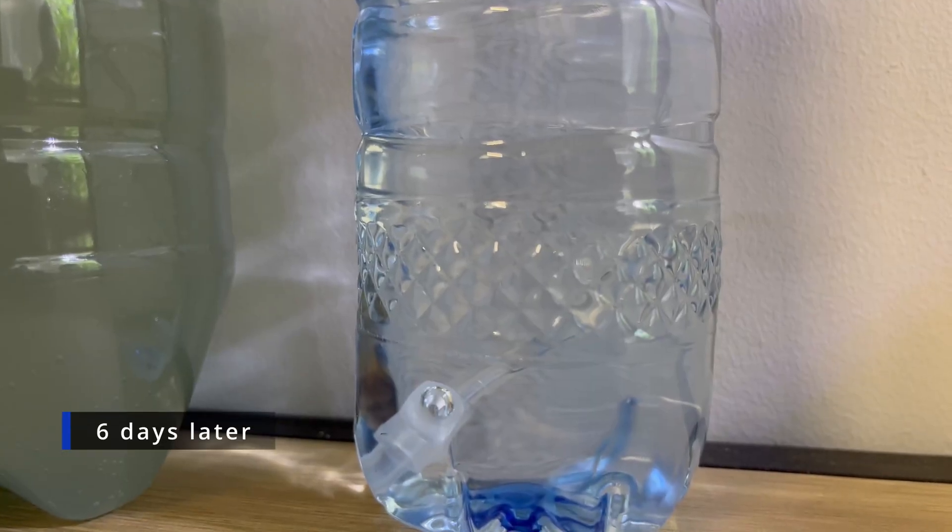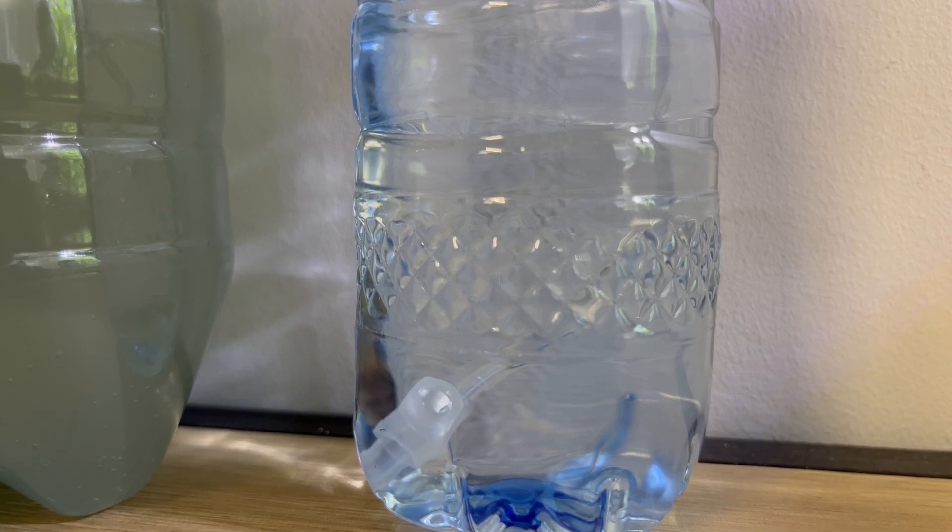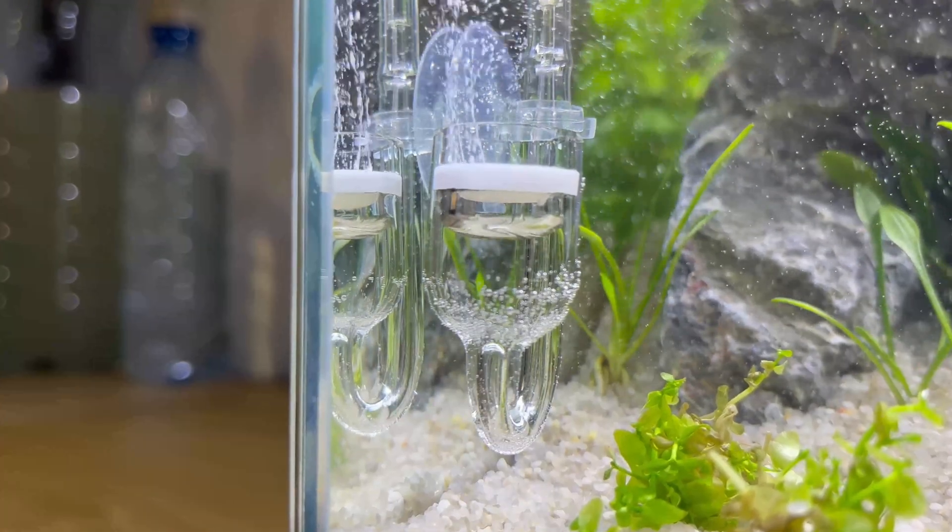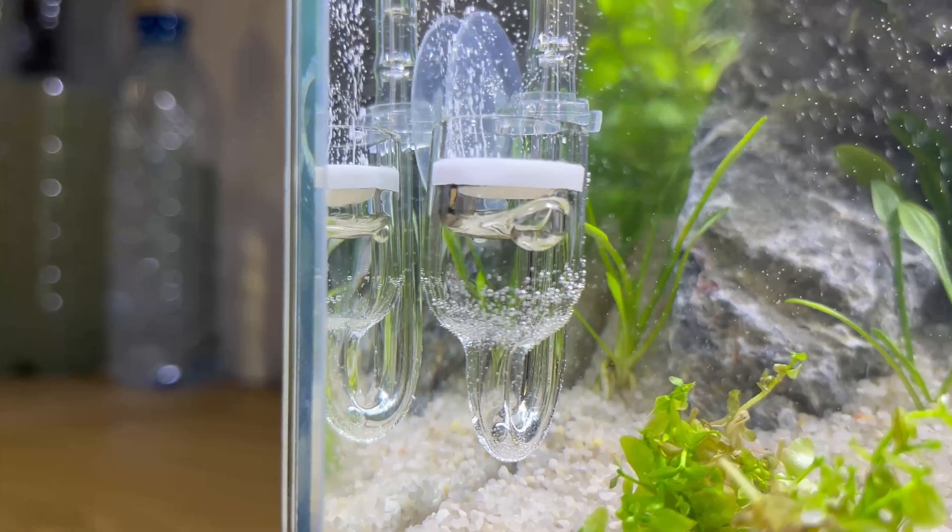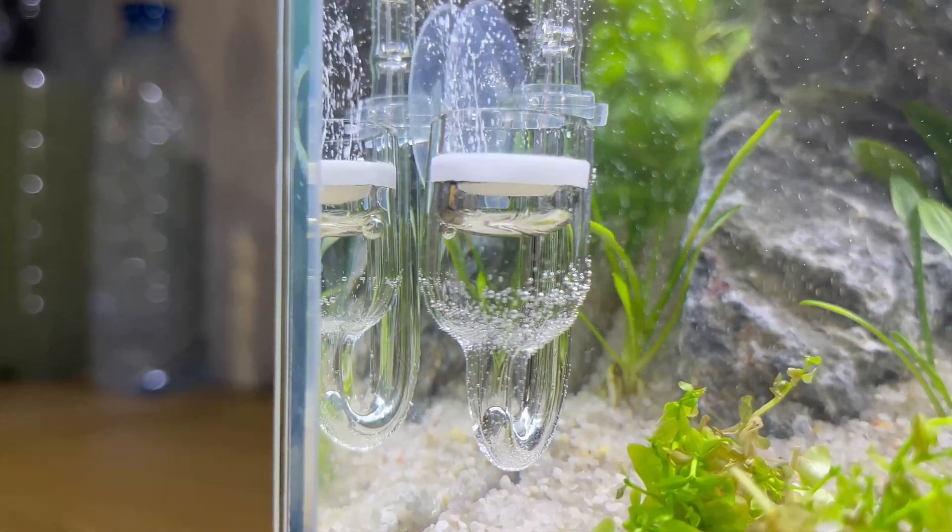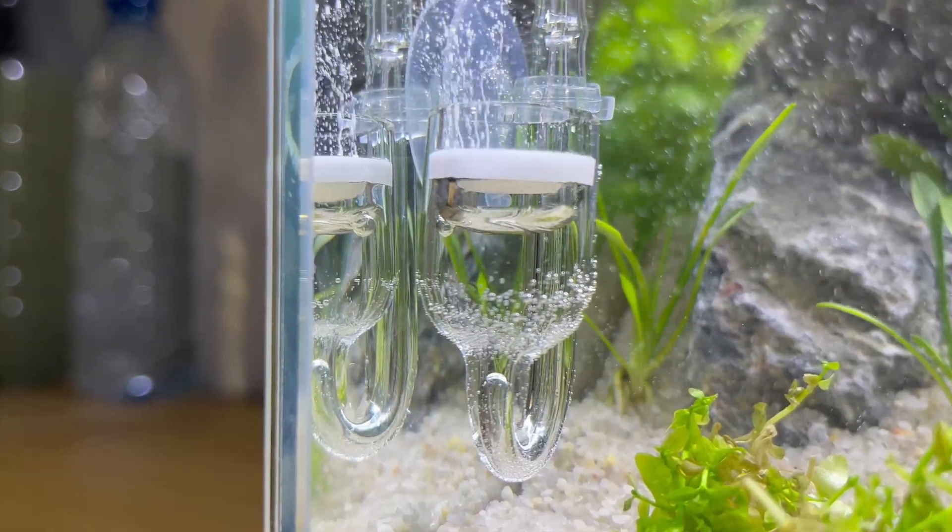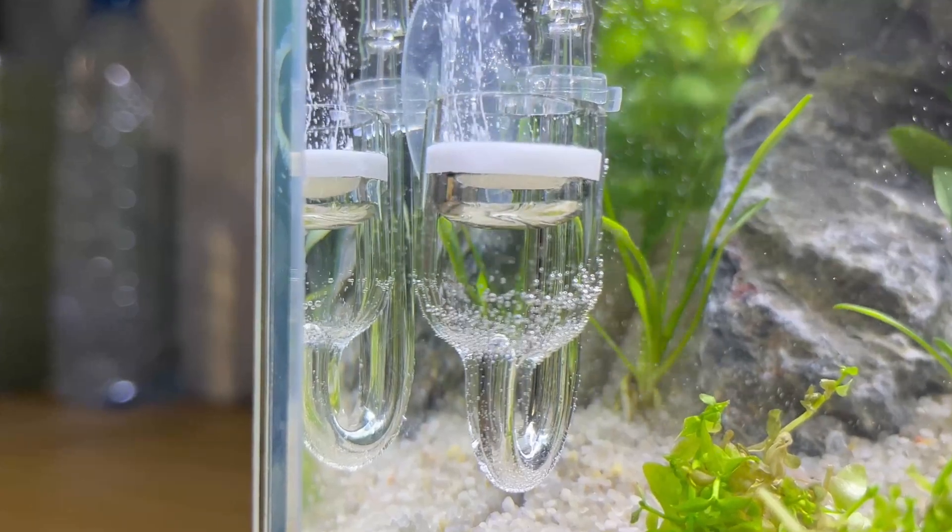And this is the footage from 6 days later. As you can see the CO2 is still being produced, and the production rate hasn't changed at all. And speaking from experience, it should last for at least 2 weeks. But it all depends on how much yeast you put into the system at the very beginning. More yeast you put in, the faster it will use all the sugar. But obviously it will give you much more CO2.